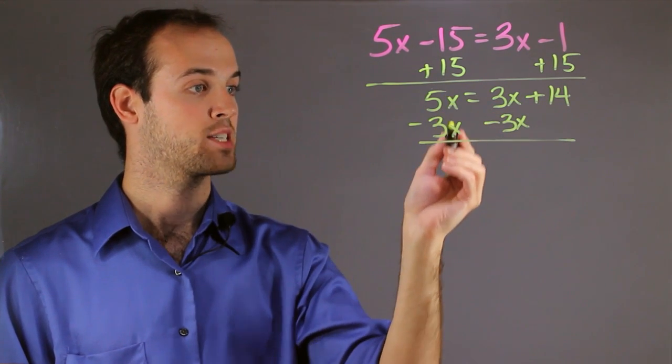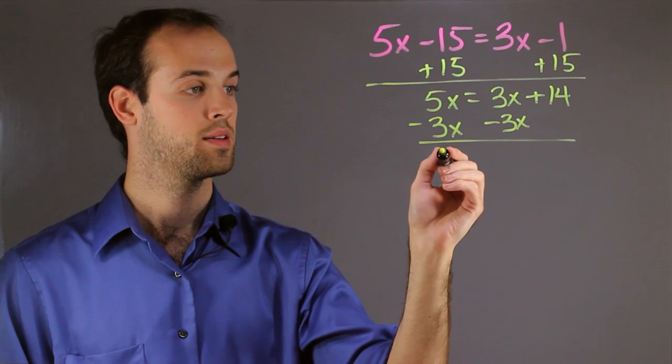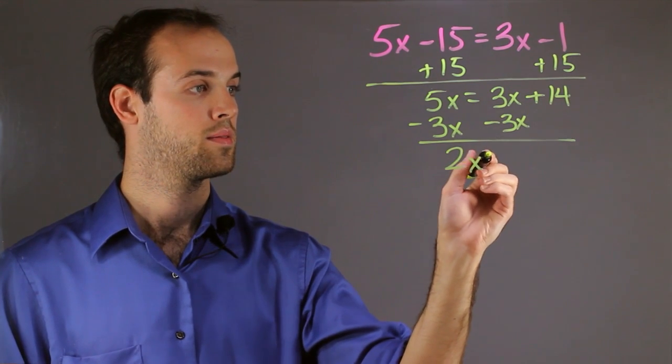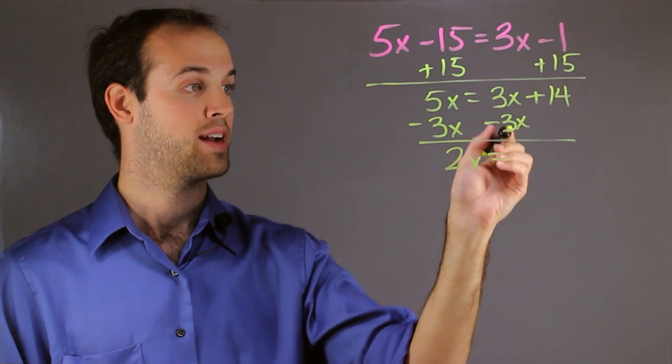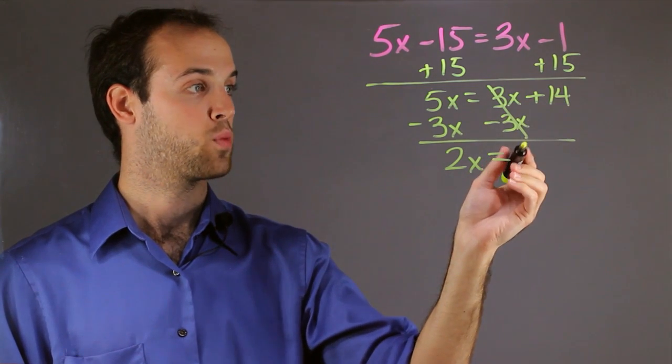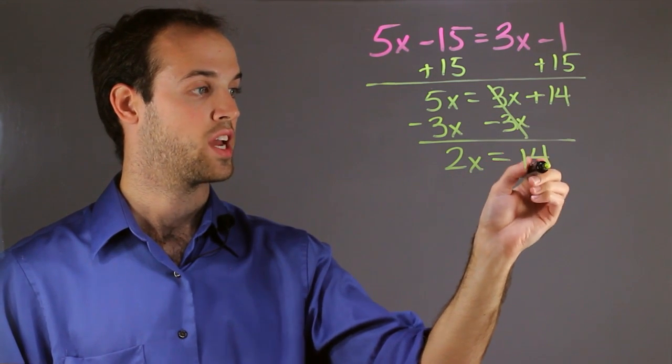And I'm left with 5x minus 3x is 2x, 3x minus 3x cancels out, and I'm left with a positive 14, because that didn't change.